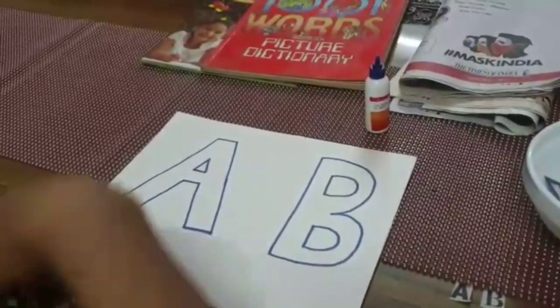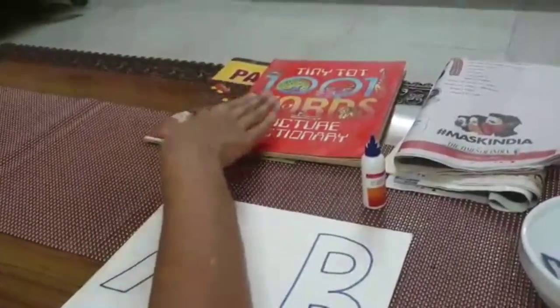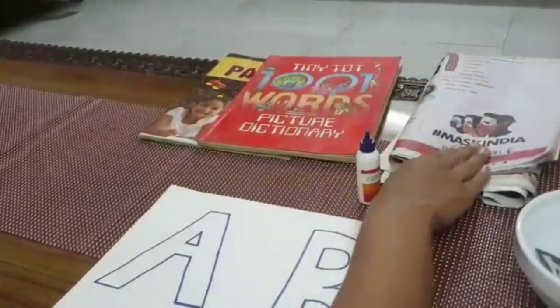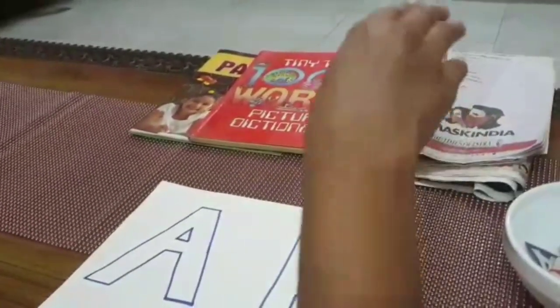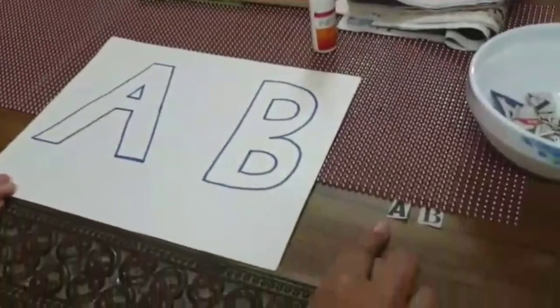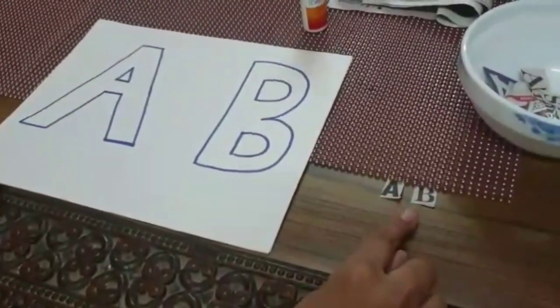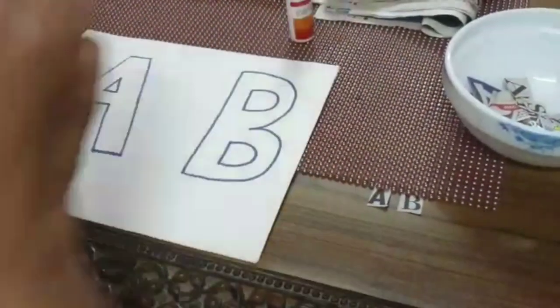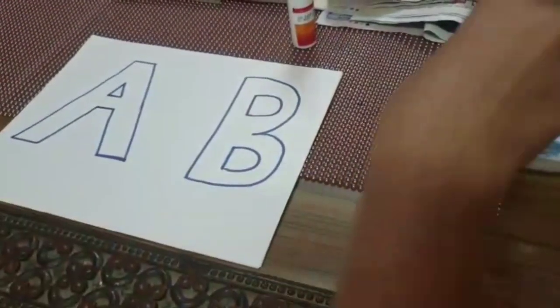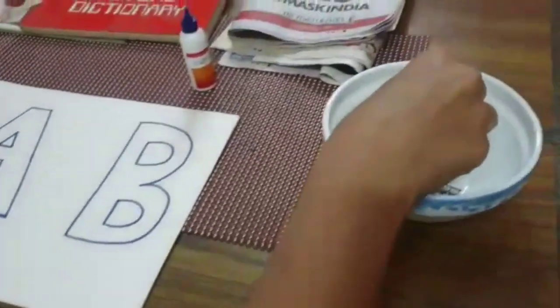You all must be having old magazines, books and newspapers at home. Tell your mama to cut capital letter A and B from them and then mix it in a bowl like this.